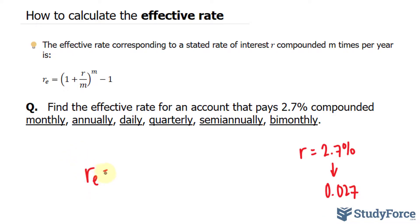So the effective rate is equal to 1 plus 0.027 divided by m, which we'll put in in a moment. This m, which we'll leave blank, minus 1.